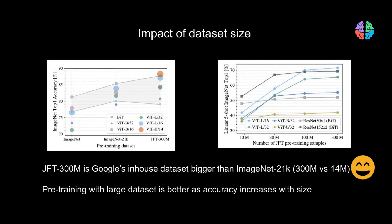The size of the dataset seems to play a major role for ViT. Clearly, for all the variations proposed, performance is at its best when pre-trained with JFT — a 300 million image dataset — compared to ImageNet, which only has 14 million images. Also note that top-1 accuracy increases as the number of samples in the JFT dataset increases. Interestingly, JFT is an in-house dataset owned by Google, yet the paper was submitted anonymously using that dataset.